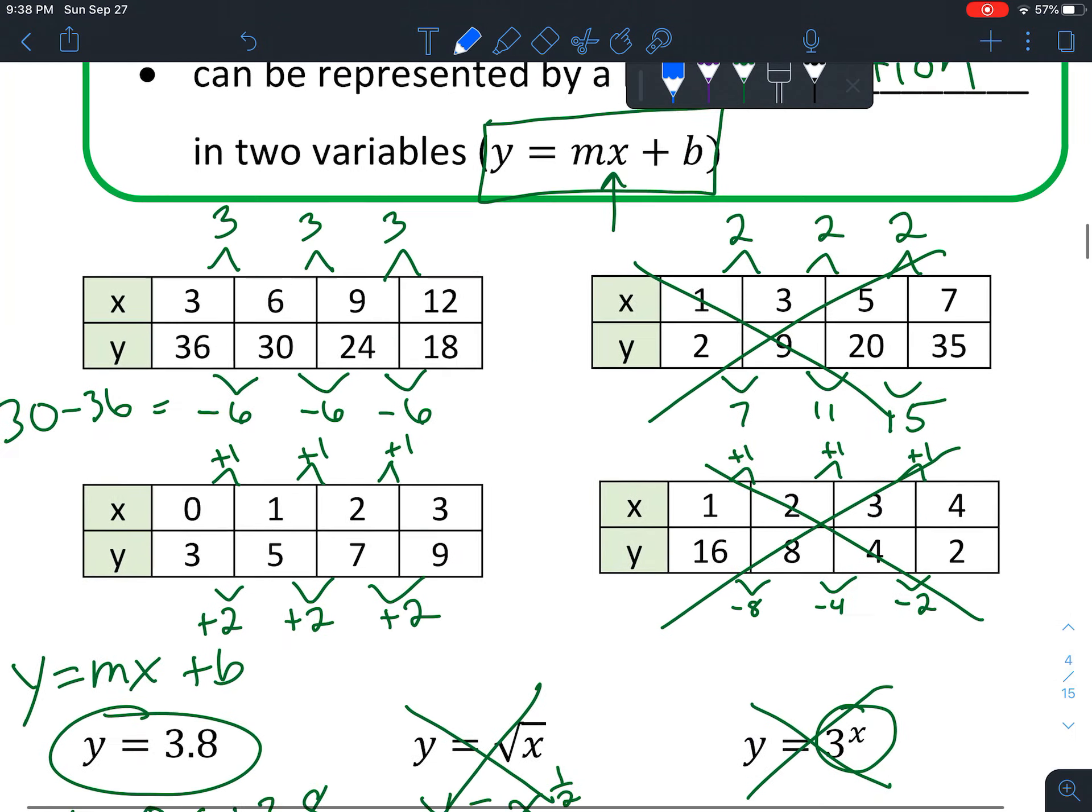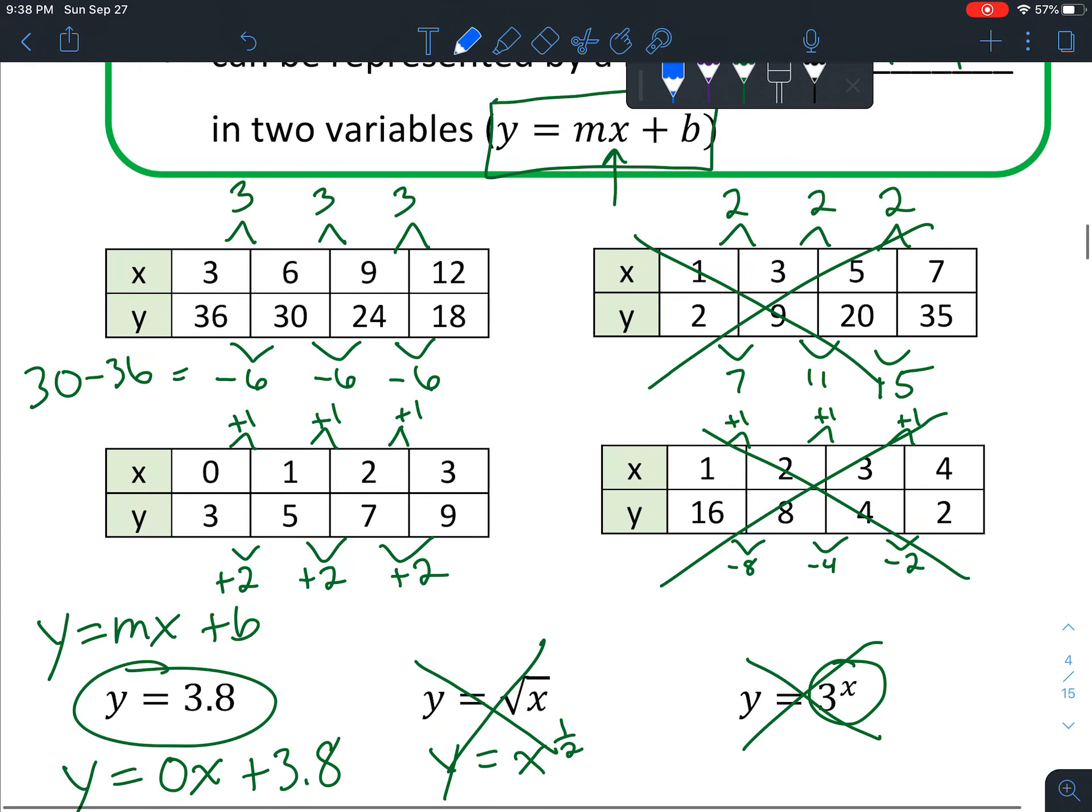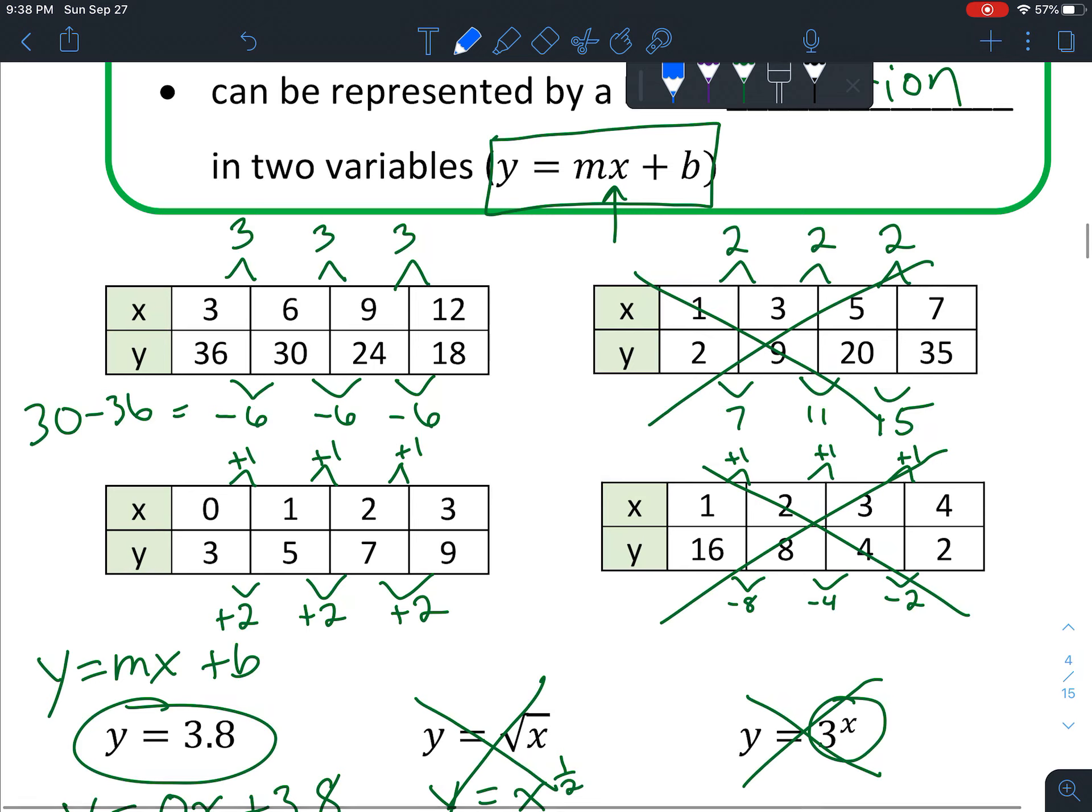All right, so on the pod we're actually going to focus on these, so you're going to be finding the differences. If you have a common difference on top and a common difference on the bottom, then you're good and it's a linear function. Let me know if you have any questions, and I'll talk to you later. Bye.